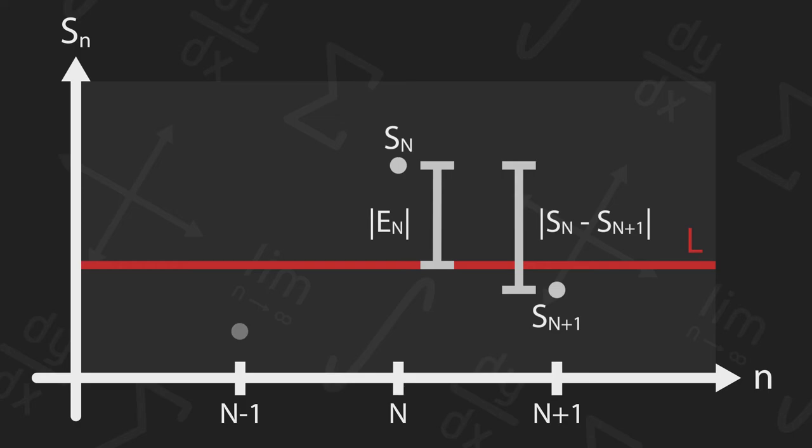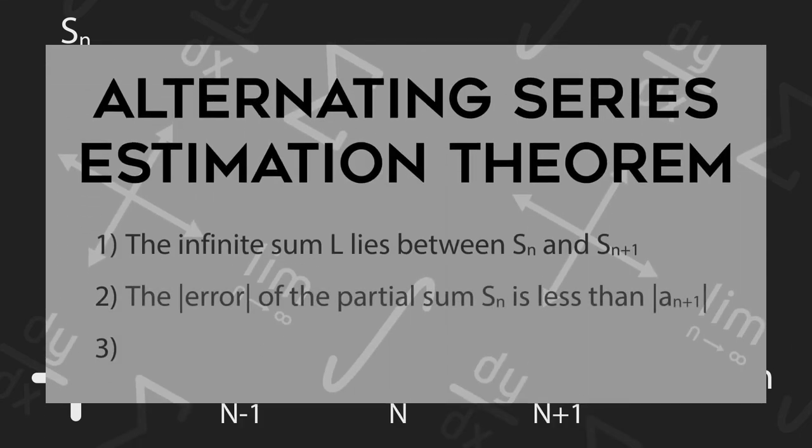Finally, let's piece together that the difference between two sequential partial sums is the term that separates them, which must mean that the error must be less than A sub n plus 1. This statement becomes the second part of the theorem.